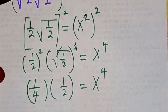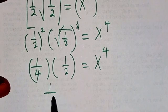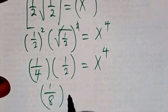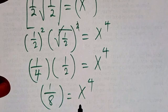So now from there, the next thing we are going to do is if we multiply this, we are going to have one over eight equals x to power four.